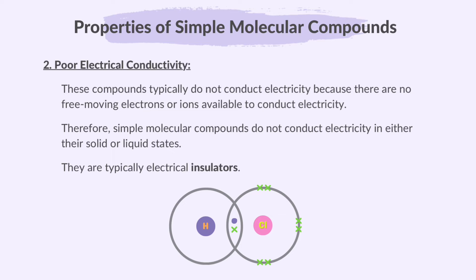In the case of hydrogen chloride, hydrogen has a full stable outer shell with two electrons in its first shell and chlorine has eight electrons in its outermost shell, so there are no free electrons to conduct electricity.